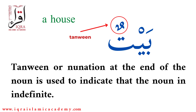Tanwin, or nunation, at the end of a noun is used to indicate that the noun is indefinite. When we use tanwin at the end of a noun, it indicates that the noun we have used is indefinite.